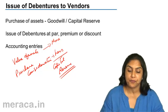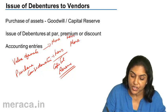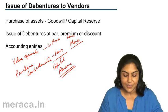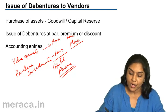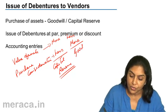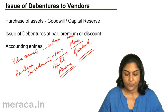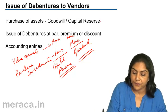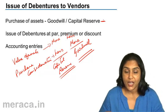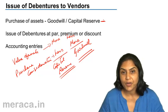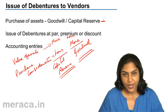Similarly, if the value of the assets is lower while the purchase consideration is more — that is, if the purchase consideration is higher and we are paying more — then we are paying this extra amount on account of goodwill. So we need to know whether there is any goodwill or capital reserve: if the purchase consideration is higher, goodwill will arise; if purchase consideration is lower, we make a profit and capital reserve will arise.